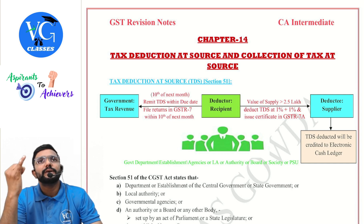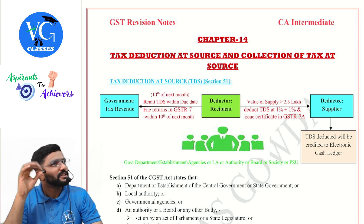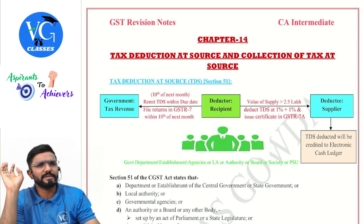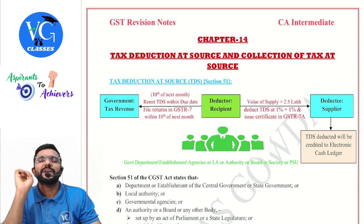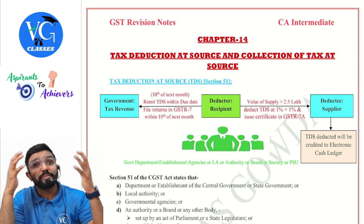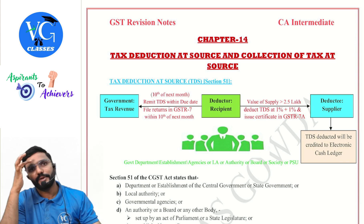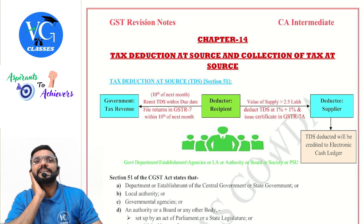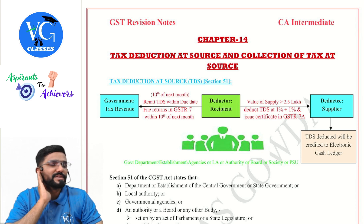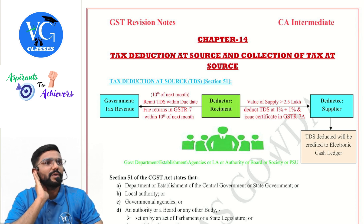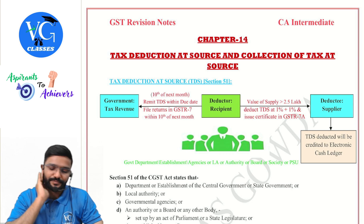E-way bill and accounts and records were actually covered at the intermediate level under the old syllabus as a topic, but now under the new syllabus they have been made into separate chapters. Similarly, place of supply, and also TDS and TCS — TDS and TCS were not part of the old intermediate syllabus, but now under the new syllabus they have been made applicable.